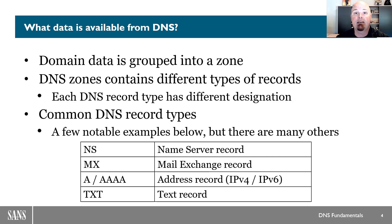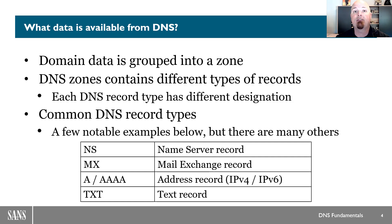One important thing to remember about DNS is that it really only answers the specific question that we ask. Unless a server is either misconfigured or has been intentionally configured to give you everything it knows, you have to ask it a specific question. So if I want to know about www.sans.org, I send a query and I get a response. I can't ask the server to tell me everything it knows about the sans.org zone — because that's not how it works.